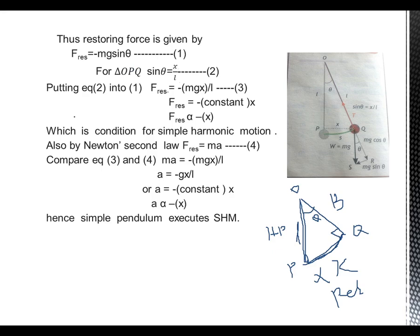This is equation number 2. Putting equation 2 into equation 1: substituting x/L in place of sin θ, the restoring force = −mg × (x/L). In this entire system, mass m, g, and length L are constants — only x is variable because it changes (it is the displacement or amplitude). So replacing mg/L with a constant, we get: restoring force is directly proportional to displacement (F ∝ x).